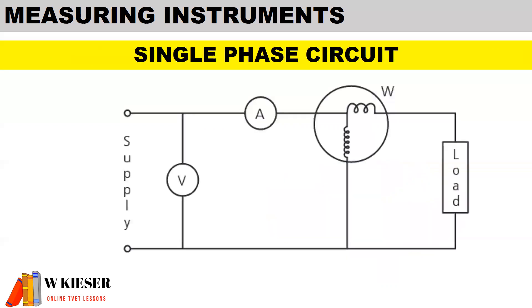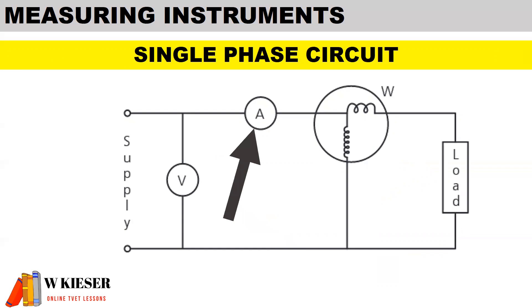For a single phase circuit we connect our measuring instruments directly to the load. The voltmeter is connected in parallel to the load, and the ammeter is connected in series to the load. The wattmeter, which measures the amount of energy consumed per hour in kilowatts, has two coils — the current coil connected in series to the load and the voltage coil connected in parallel to the load.